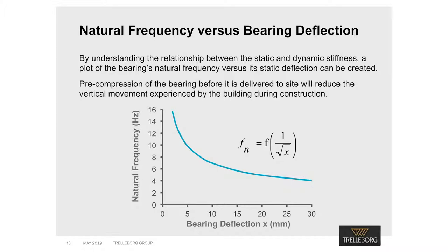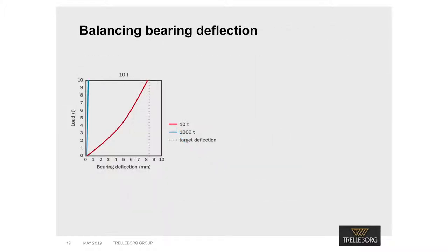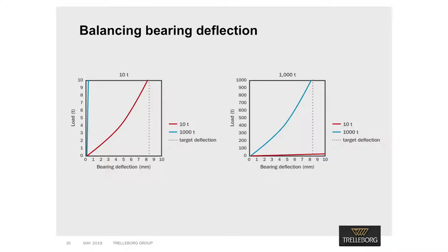Bearings designed for high isolation performance have a low natural frequency and may need to be pre-compressed to about 80% of the working load before delivery to site. This will significantly reduce the vertical movement experienced by the building during construction. As the distribution of the building's mass varies across its plan, each bearing location must be assessed on its own merit to ensure they all deflect evenly when supporting their designated loads. The loads from one location to another may vary by orders of magnitude. This approach prevents unnecessary stress to the building's structure and ensures all bearings deflect by the same level — so whether it's a 10 tonne or a 1000 tonne bearing, both should achieve the same deflection at their working loads.